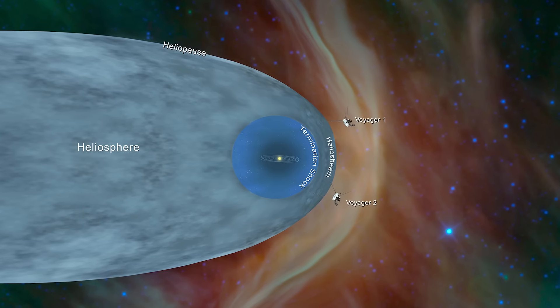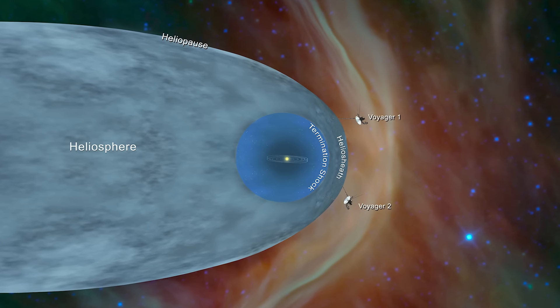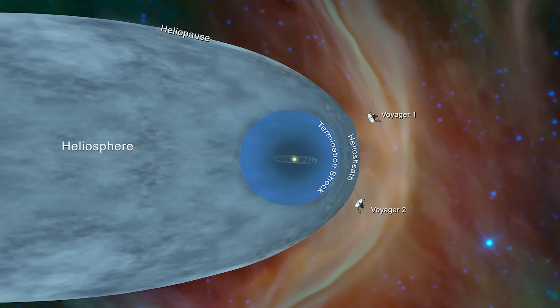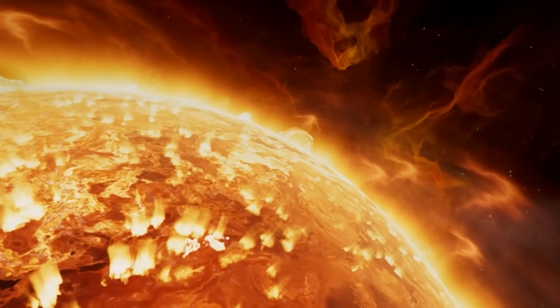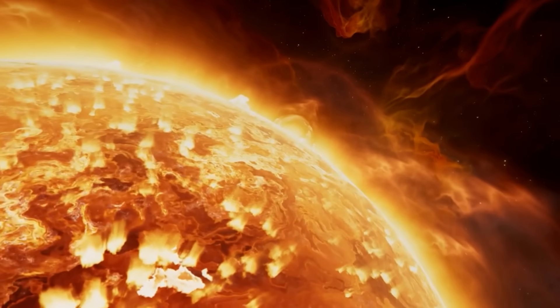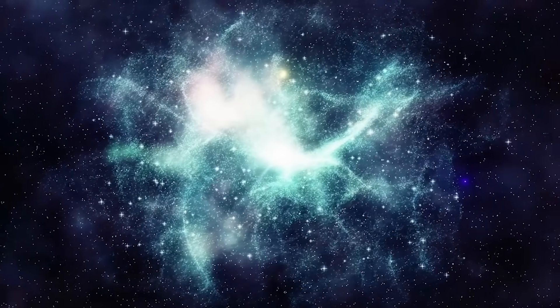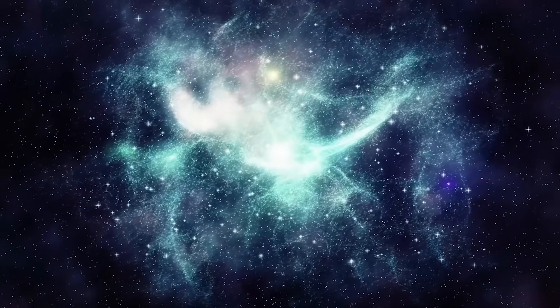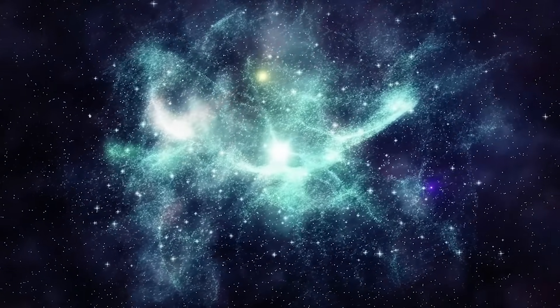One of the key findings centered around the behavior of magnetic fields beyond the heliopause, the boundary where the sun's solar wind is no longer strong enough to push back the interstellar medium. According to previous models, the magnetic fields in this region should align smoothly and predictably.